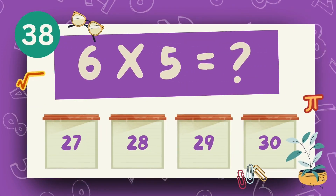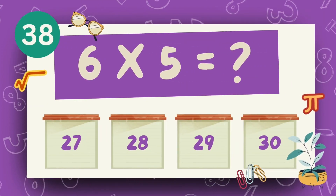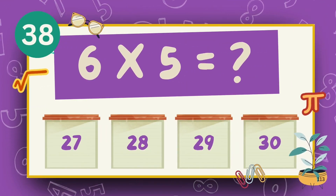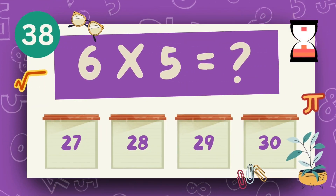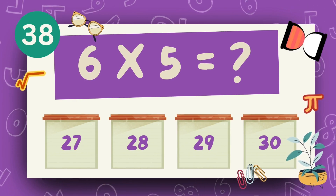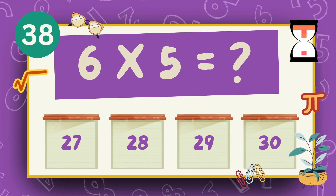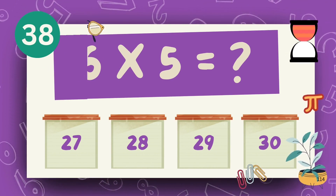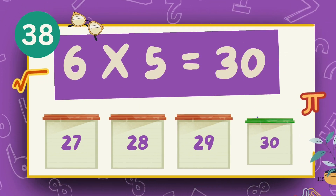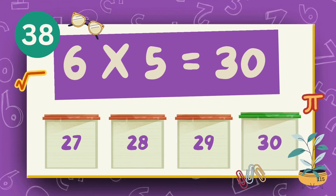What is six multiply five? The answer is thirty.